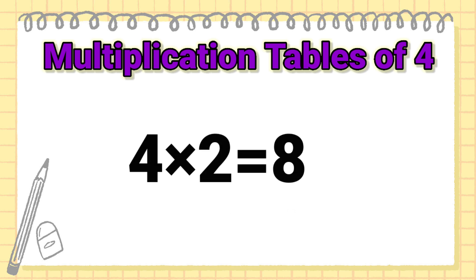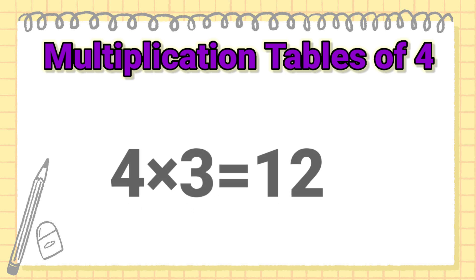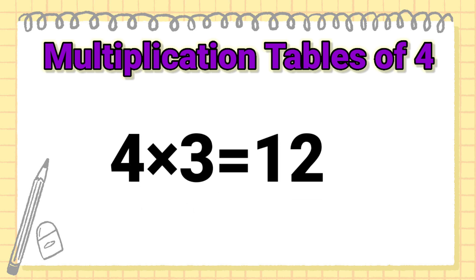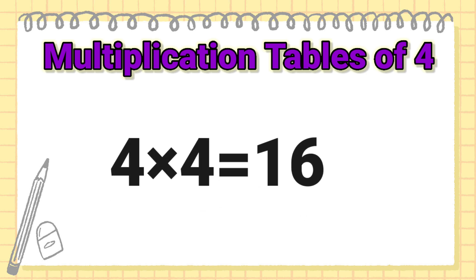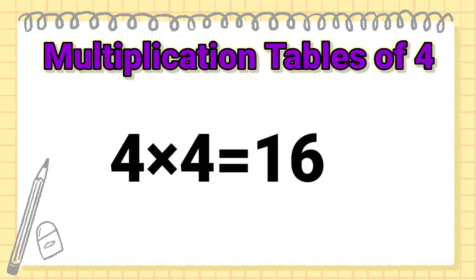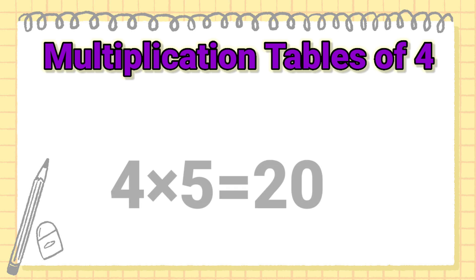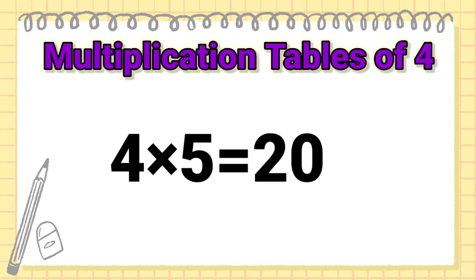Multiplication Table of 4. 4 1's are 4, 4 2's are 8, 4 3's are 12, 4 4's are 16, 4 5's are 20.